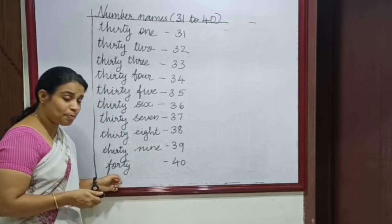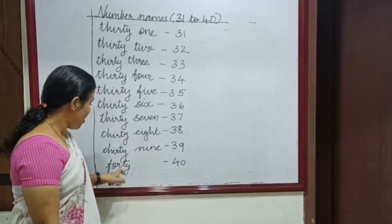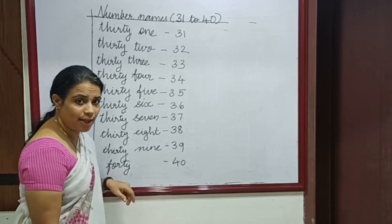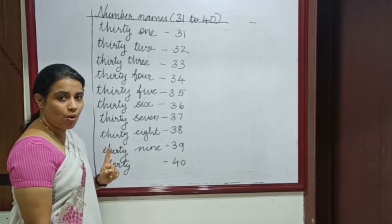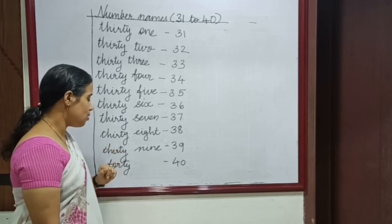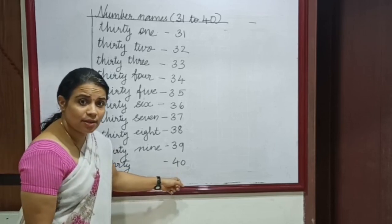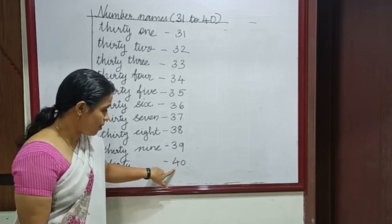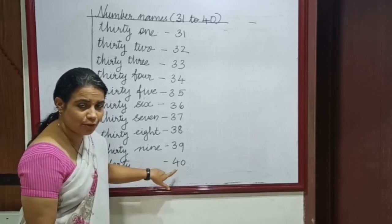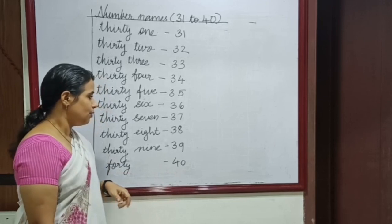Please spell 40: F, O, R, G, Y — 40. F, O, R, G, Y — 40. How many tens and ones are there in 40? Tell me: 4 tens and 0 ones. 4 tens and 0 ones.